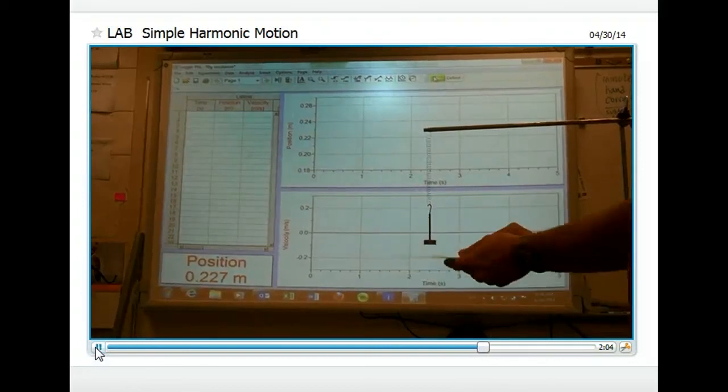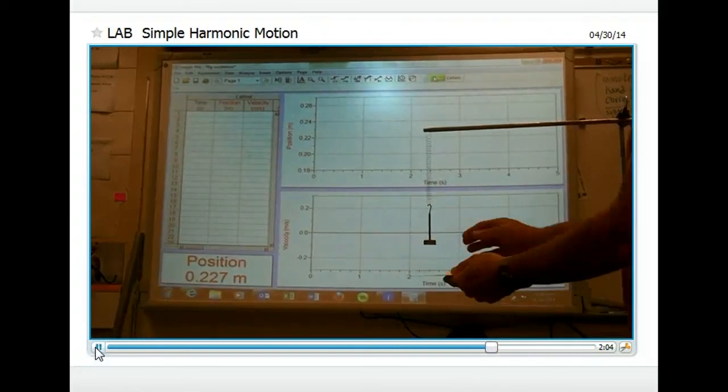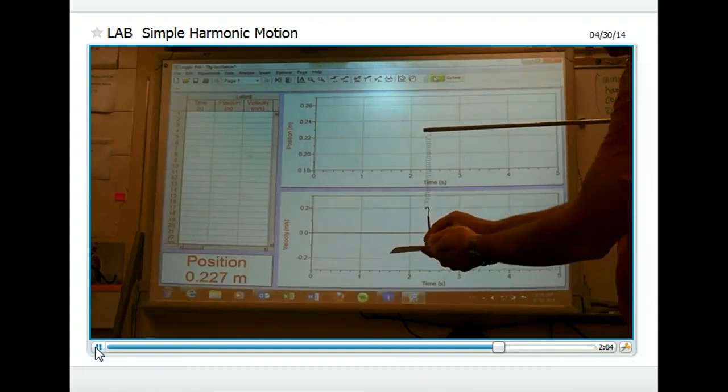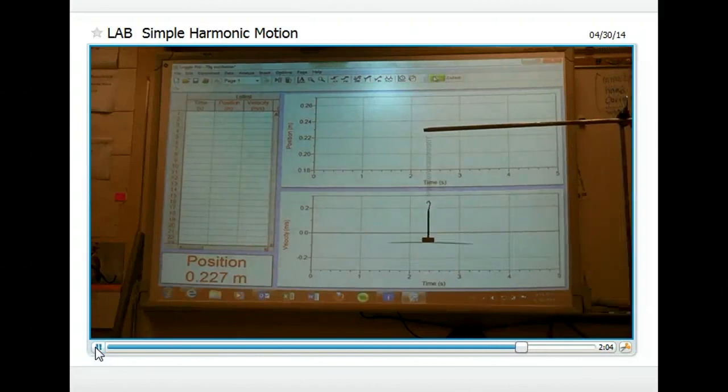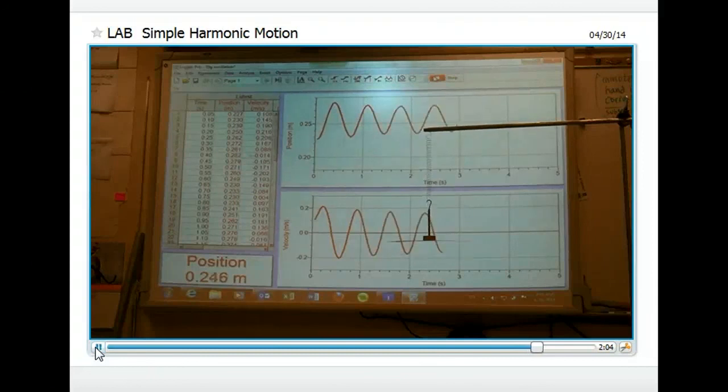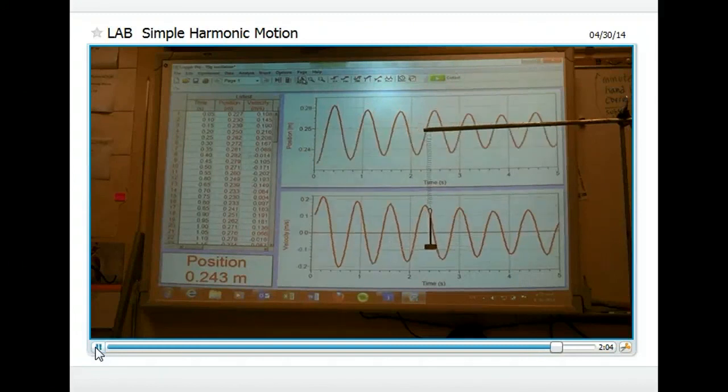Next we're going to look at damped oscillation. So I'm going to take an index card, attach it to the bottom of the mass, and that will help to slow it down due to air resistance. And you can see from the graph the effect it had on the amplitude of the wave as time went on.